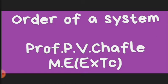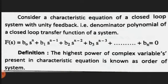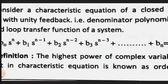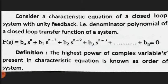Hello students, today we see the next topic: the order of a system. Consider the characteristic equation of a closed loop system with unity feedback — that is the denominator part of the transfer function. We have already seen transfer functions with poles and zeros. Consider only the denominator part of the transfer function, that is f(s) = b₀sⁿ + ... + bₙ = 0. The highest power of the complex variable s present in the characteristic equation is known as the order of the system.